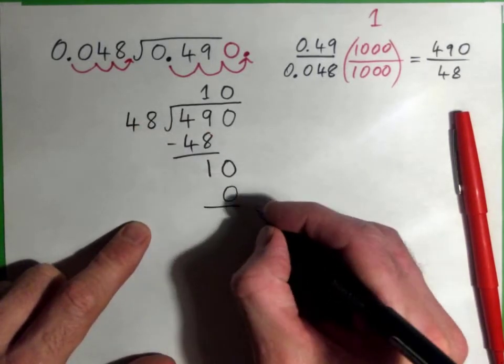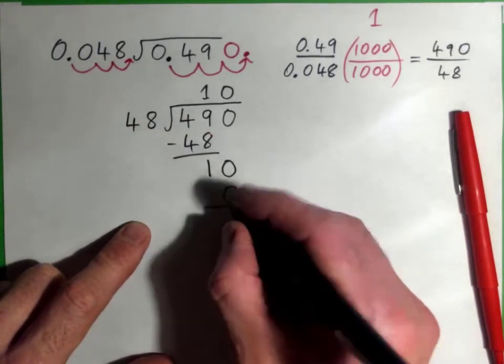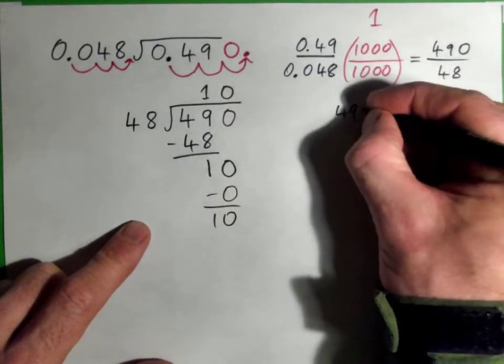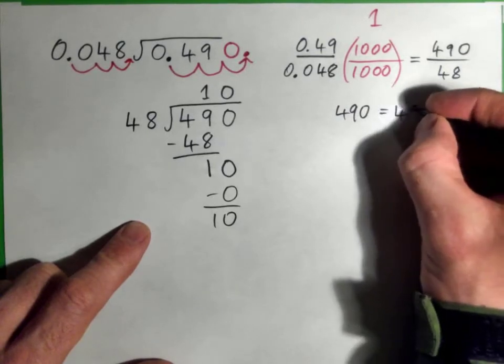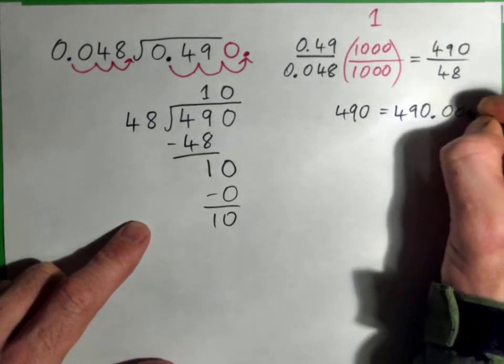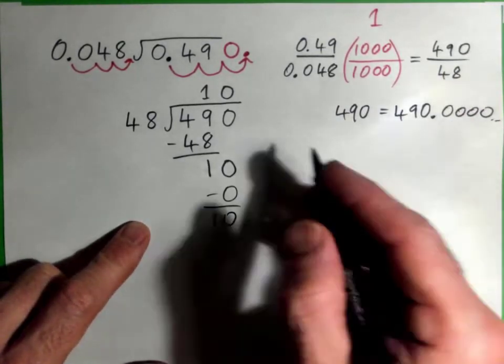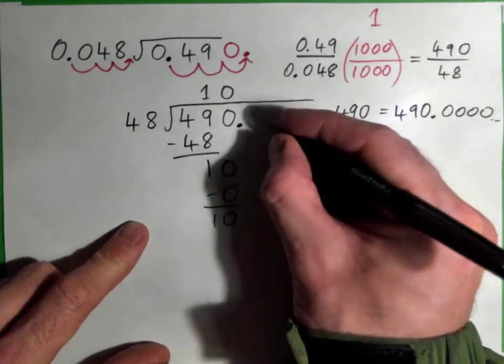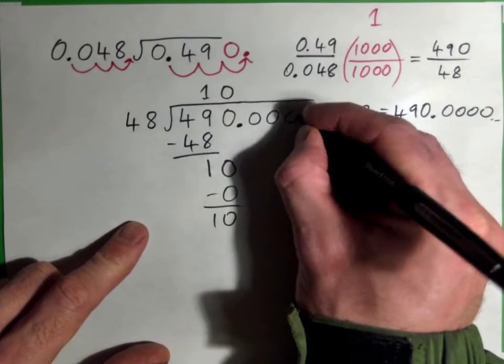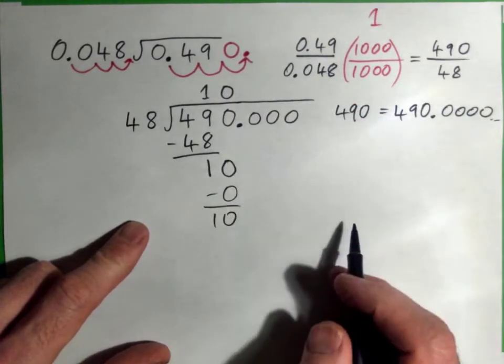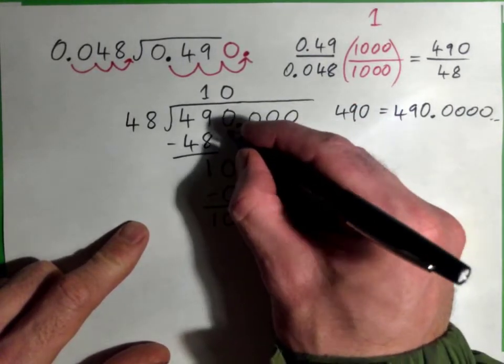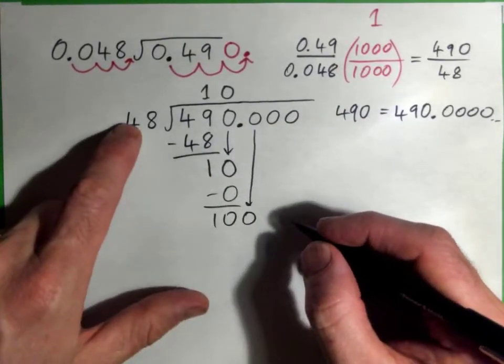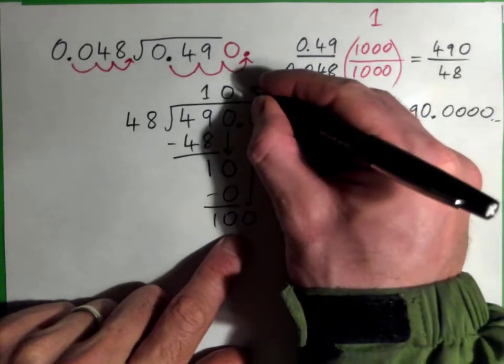And we subtract to get 10 and bring down a 0. Now 490, everybody remember, is actually 490.0000 is the same thing. It has these like invisible 0s here that we just don't write because we want to save ink. But there are a bunch of 0s there we can use. So we brought this 0 down for here. We've got to bring this 0 down for this one.